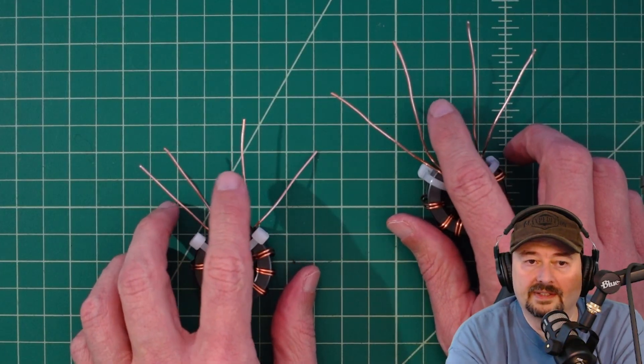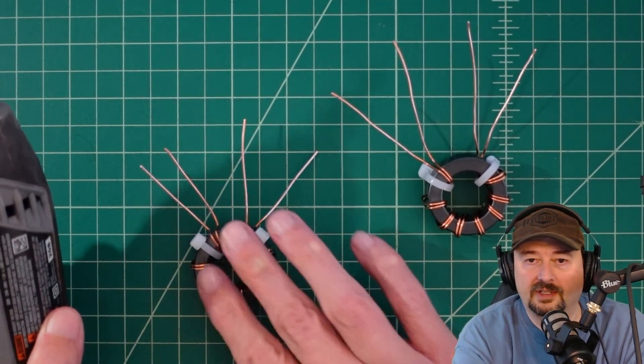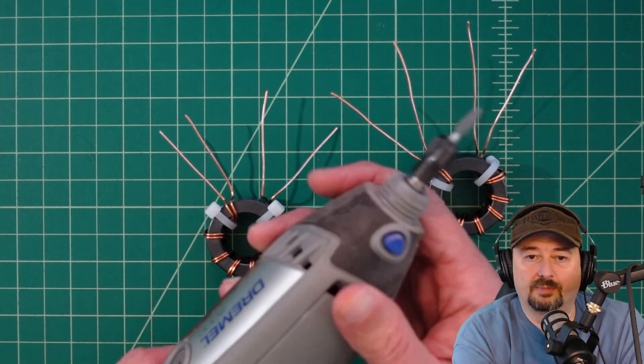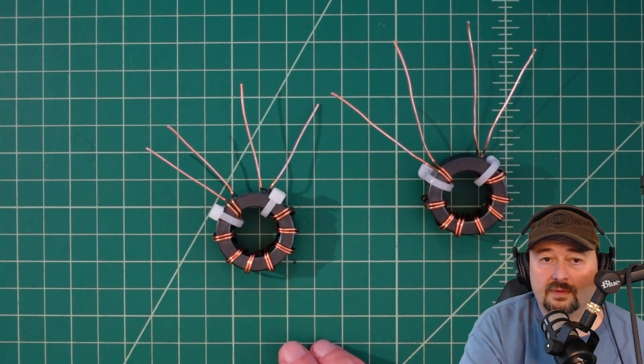We've scraped these wires pretty good and you have to be really careful to get all the enamel off. A little pro tip: the Dremel is your friend. I used this and it made it a lot easier than scraping with the razor blade.